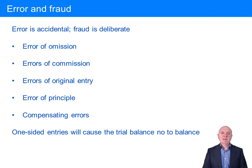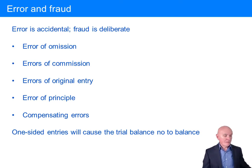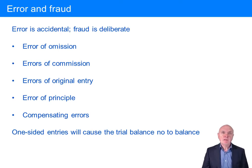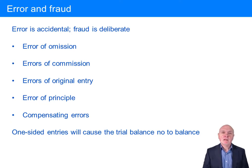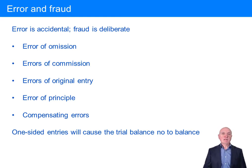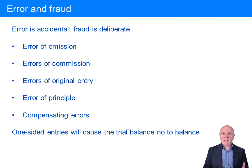Error is something accidental — we record something incorrectly but we don't mean to do it. Fraud, however, is deliberate. Someone is trying to enrich themselves by putting an incorrect entry through the financial statements, or maybe stealing assets.